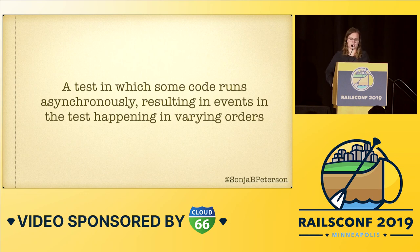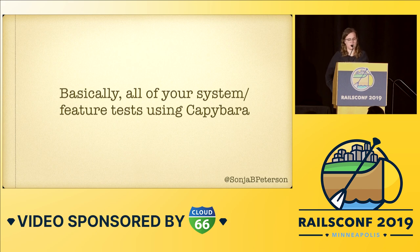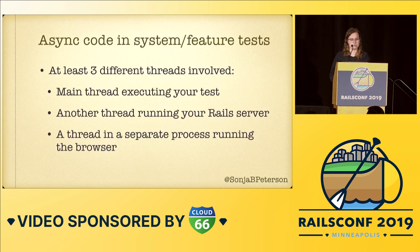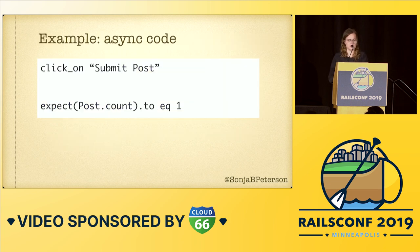Let's start with async code, which in my experience is often one of the biggest categories of flaky tests when testing Rails apps. When I say async code, I'm talking about tests in which some code runs asynchronously, meaning events in the test can happen in more than one order. The most common way this comes up is in your system or feature tests. Most Rails apps use Capybara — either through Rails' built-in system tests or RSpec feature tests — to write end-to-end tests that spin up a Rails server in a browser. There are at least three different threads involved: the main thread executing your test code, another thread that Capybara spins off to run your Rails server, and a separate process running the browser.